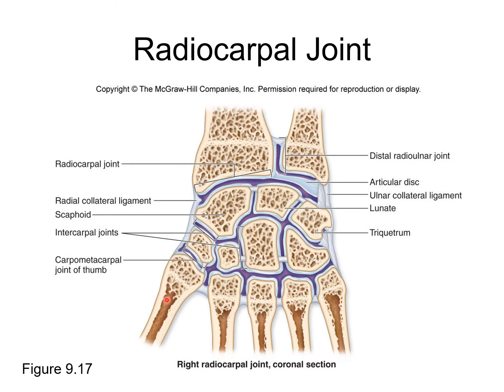The metacarpals are the bones making up the palm of your hand. The carpometacarpal joints hold the wrist (carpal) bones to the bones of the palm (metacarpals).